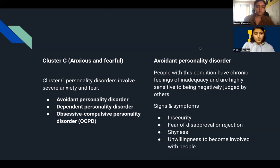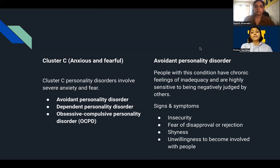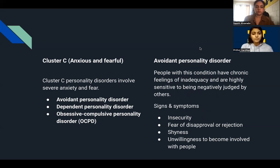Cluster C personality disorders involve severe anxiety and fear. There are three categories: Avoidant Personality Disorder, Dependent Personality Disorder, and Obsessive-Compulsive Personality Disorder. People with Avoidant Personality Disorder have chronic feelings of inadequacy and are highly sensitive to being negatively judged by others. They may want to interact with others but avoid social interactions due to intense fear of rejection. Signs and symptoms include insecurity, fear of disapproval or rejection, shyness, and unwillingness to become involved with people.